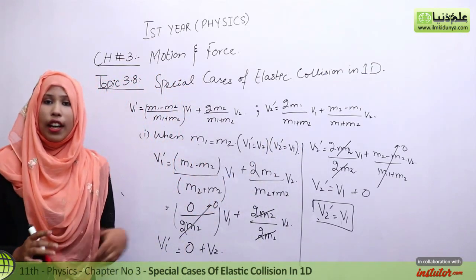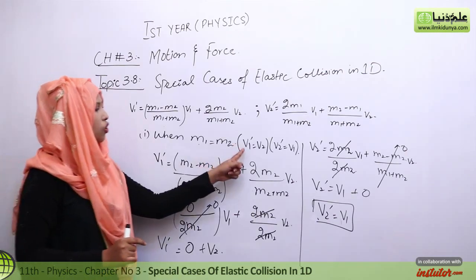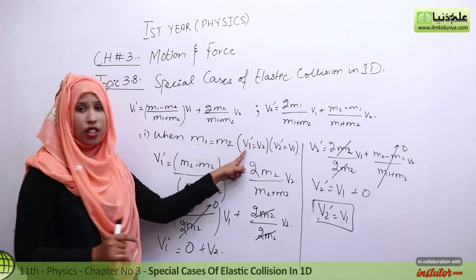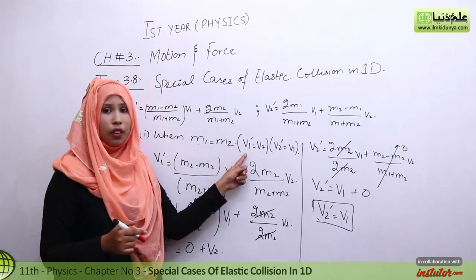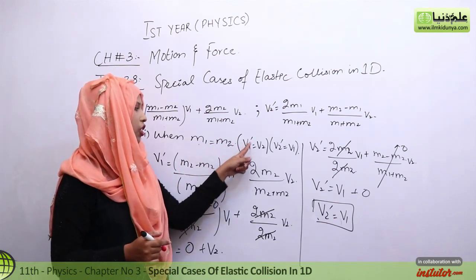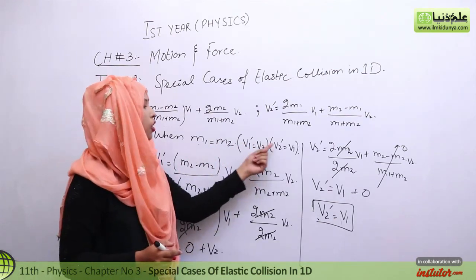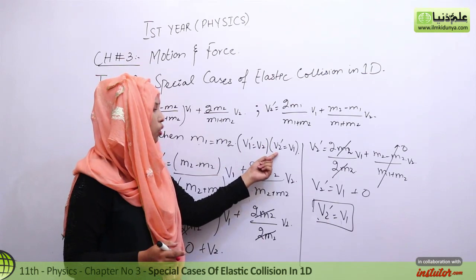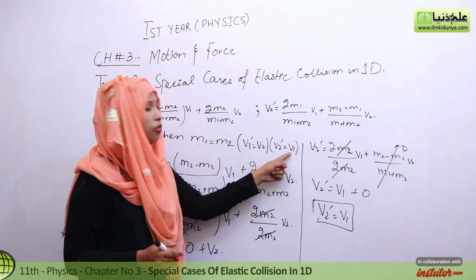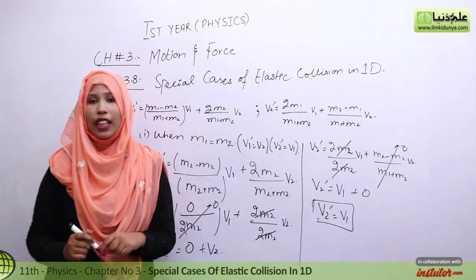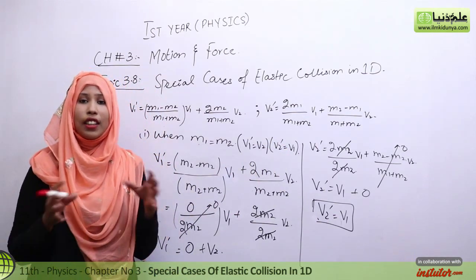So the conclusion for Case 1 is that when m1 equals m2, after the collision, ball 1's velocity v1' equals the initial velocity of ball 2, and ball 2's velocity v2' equals the initial velocity of ball 1. Simply put, the two bodies exchange their velocities with each other.